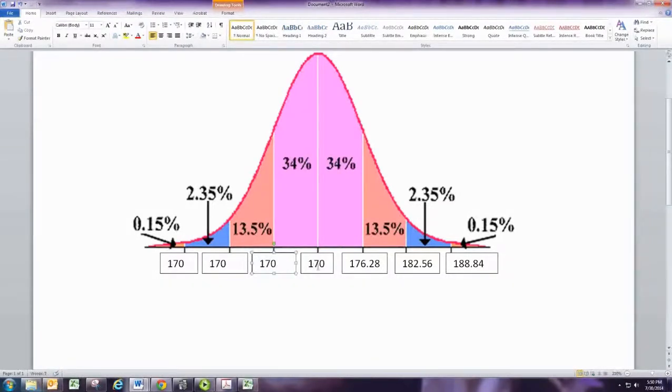Alright, now we're going to go at 170 in the middle, and we're going to subtract the standard deviation as we move to the left. So subtracting it once, you get 163.72. And subtracting it one more time, you get 157.44. And subtracting it one final time, you get 151.16.